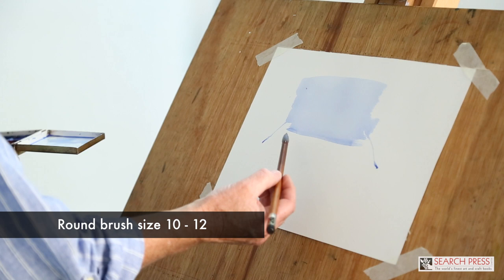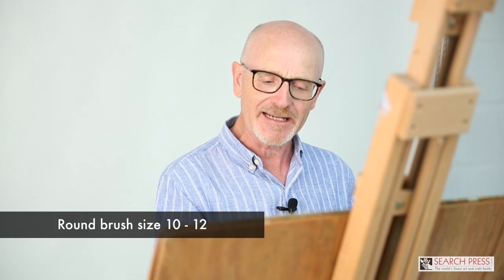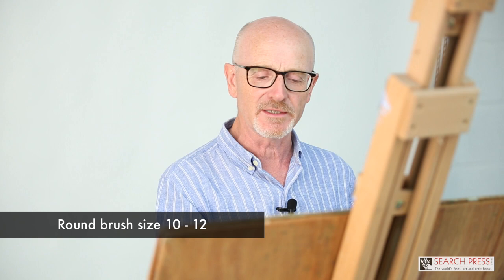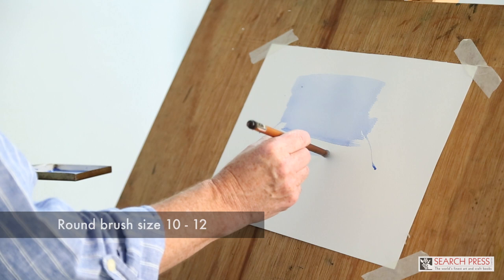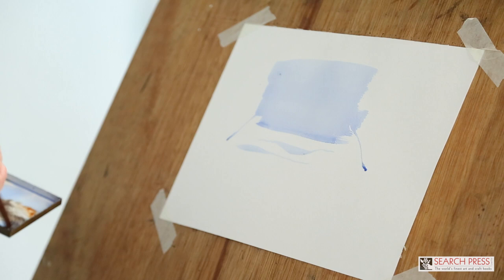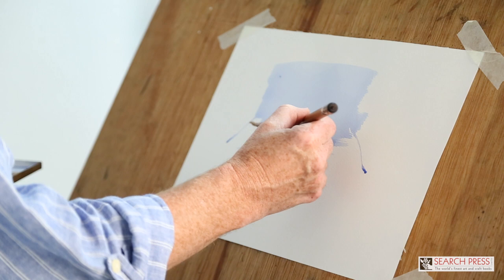The second brush I'll be using is a round brush. This is roughly a size 10 to 12. This is actually a Chinese brush, but any round brush with a good point will do. I'll be using this for things like the little shadows that you would get in snow. So we can start off with a thin line, get thicker, and get thin again. And it's also good for little things like distant areas of shrubs or trees at the end of a field.